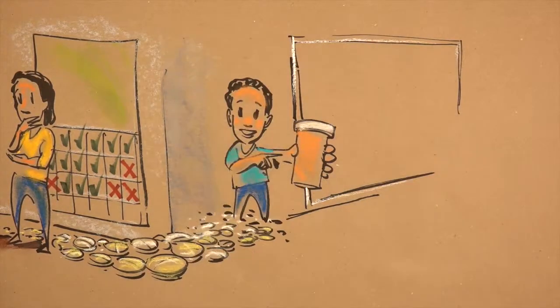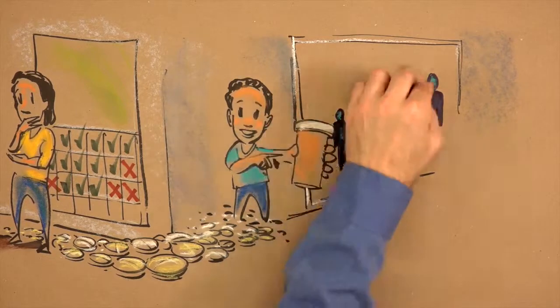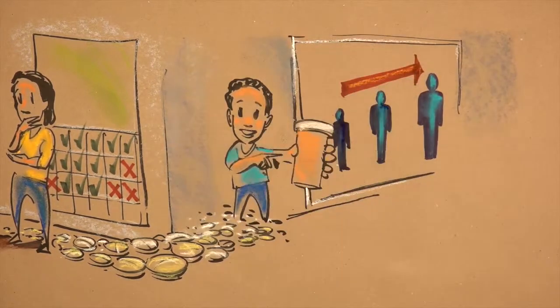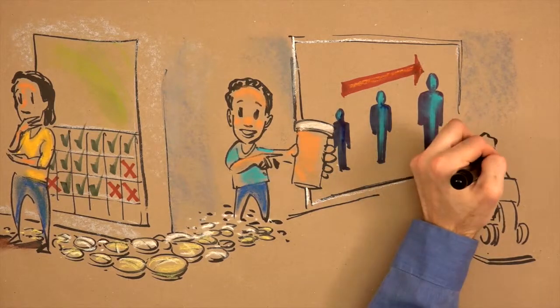For many years scientists did not understand the children's bodies are different. They thought of them as smaller adults. Doctors offered cut pills to get the right amount of medicine for children.